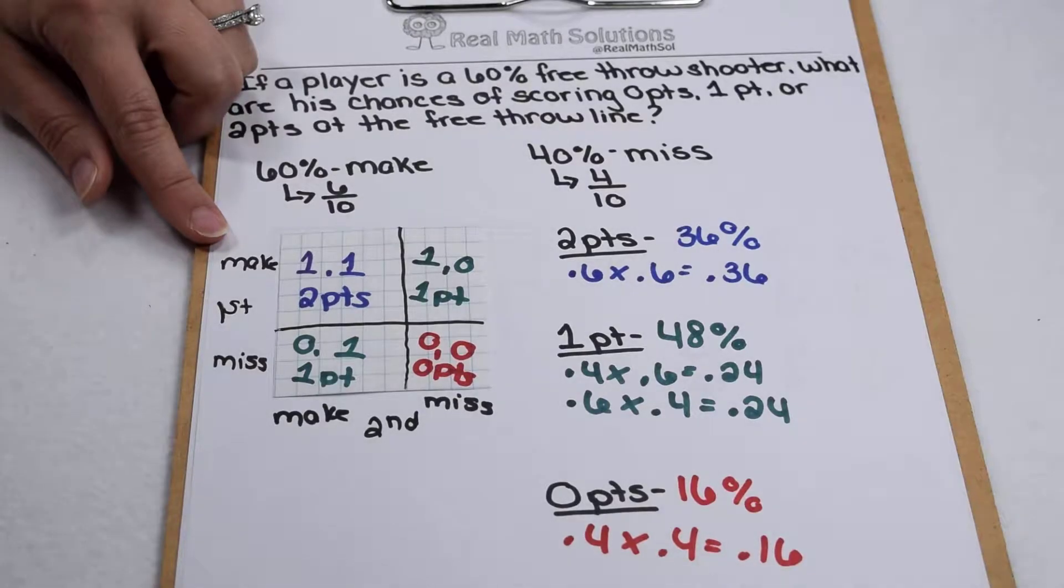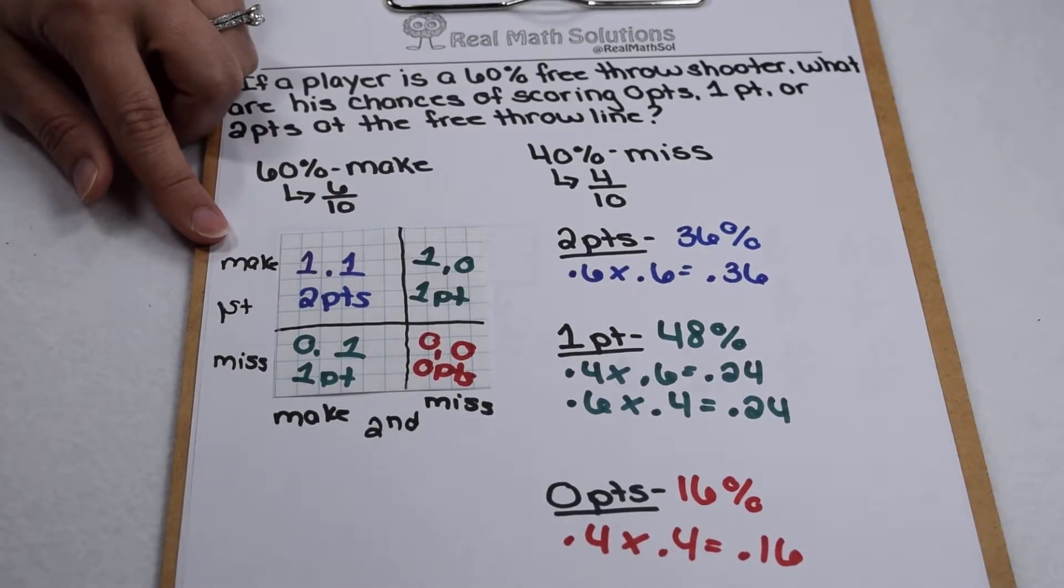So next time you're betting with your friends as to whether or not he's going to make it, draw out a quick grid and figure it out for yourselves.